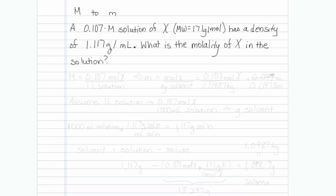This is how to get from molarity to molality. A 0.107 molar solution of X, we're given the molecular weight, has a density of 1.117 grams per ml. What is the molality of X in the solution?